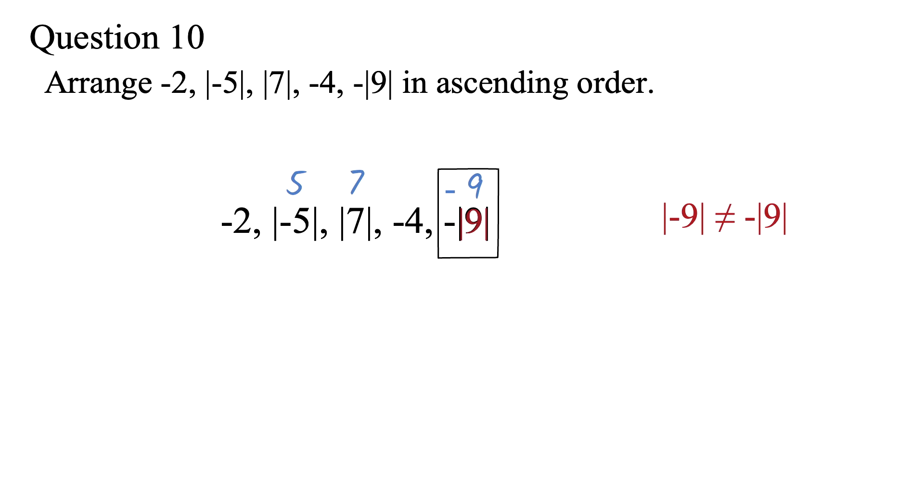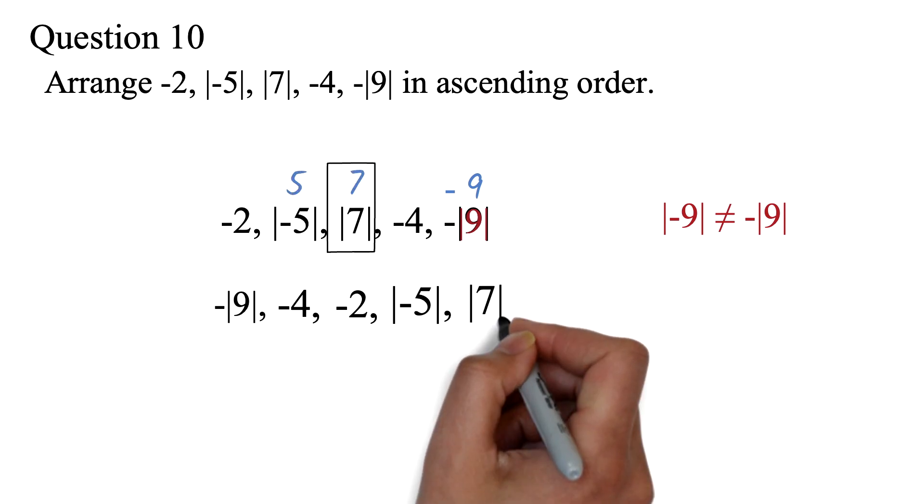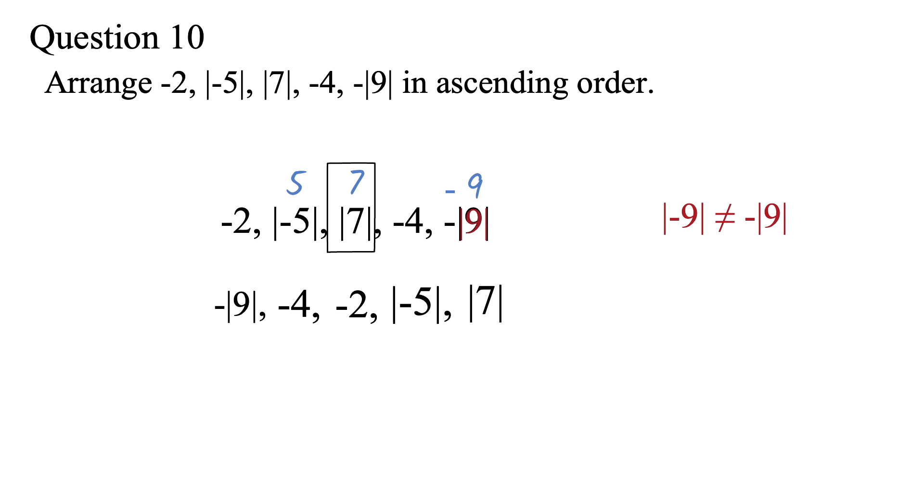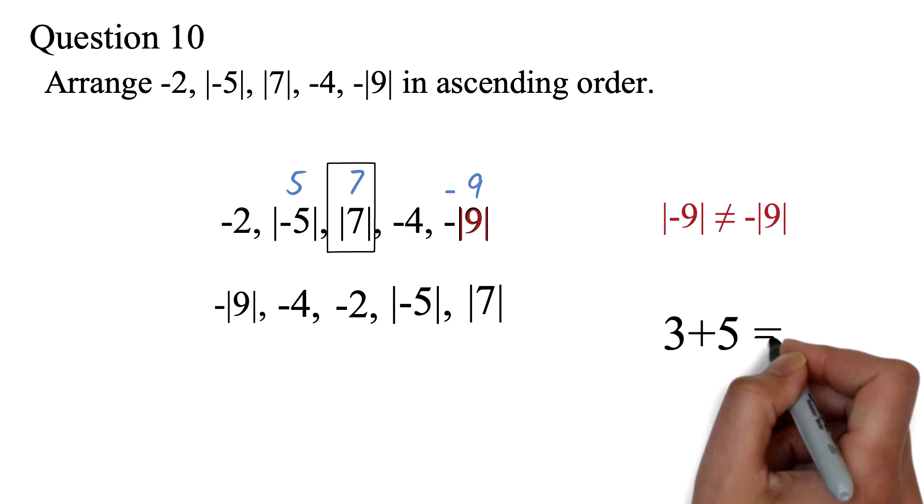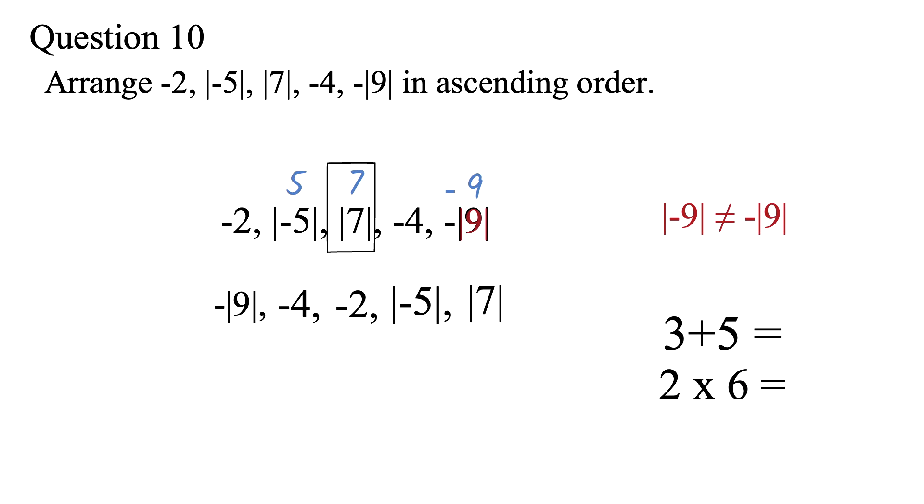Negative 9 is the smallest, so we have negative the absolute value of 9, then negative 4, then negative 2, then 5, which is the absolute value of negative 5, then the absolute value of 7. Let's move on. The next questions are going to be on operations on integers. Working with positive integers is like working with whole numbers, so most of you are familiar with it. You can easily add 3 plus 5 or multiply 2 times 6.